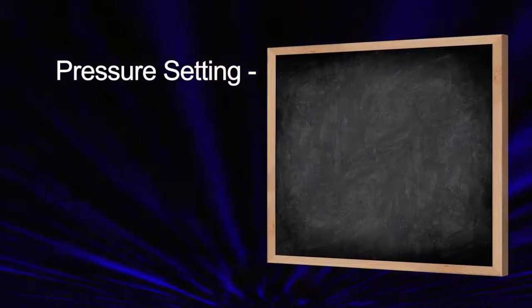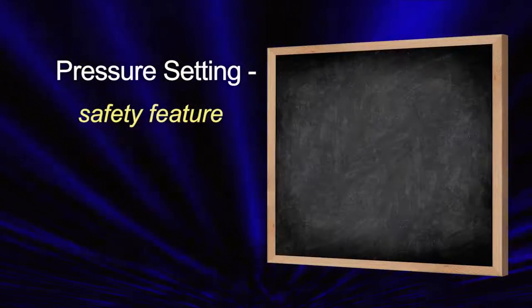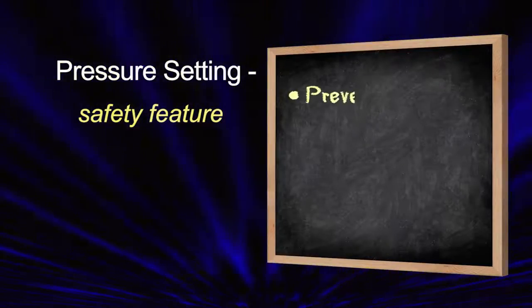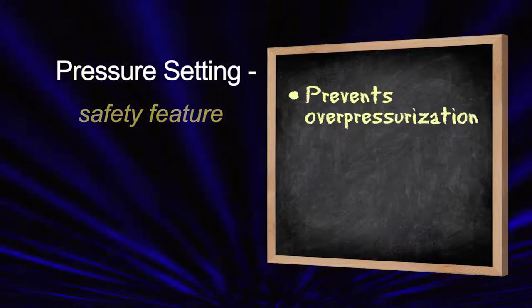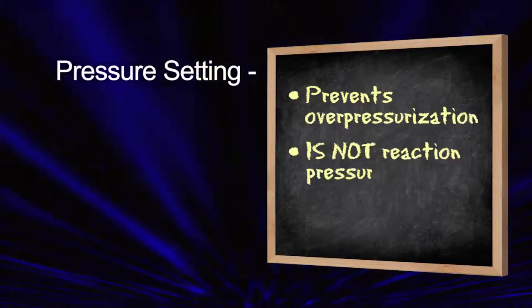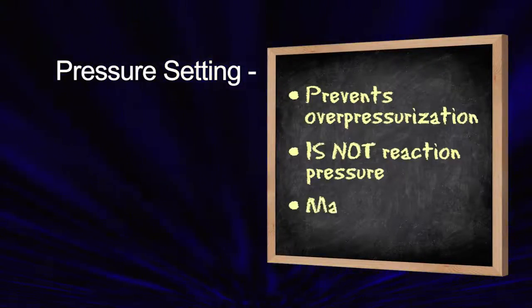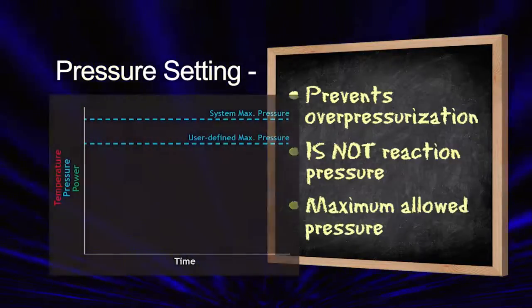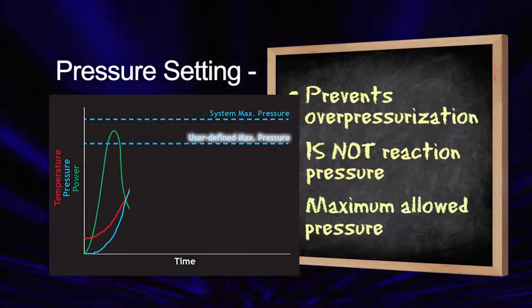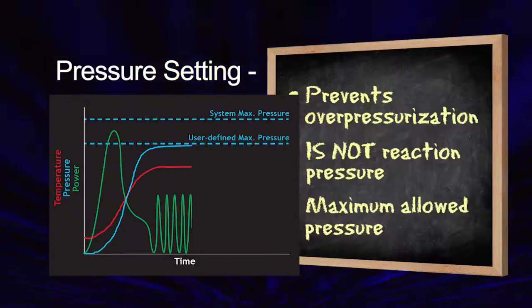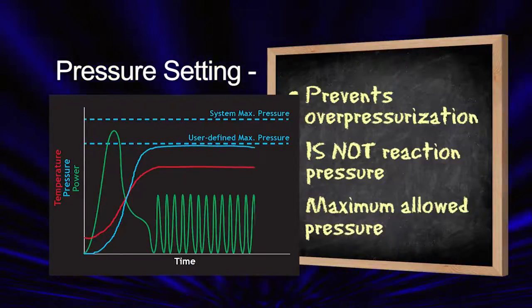Since heating solvents above their boiling points naturally generates pressure, the pressure setting on the Discover serves as a safety feature to prevent over-pressurization events. This is not the pressure at which a reaction will run, but rather the maximum allowed pressure. If the pressure reaches the user-defined setpoint, as shown here, the power will cycle on and off to prevent over-pressurization.